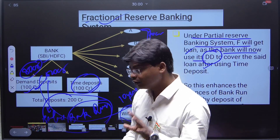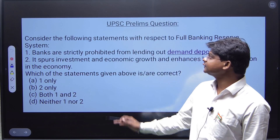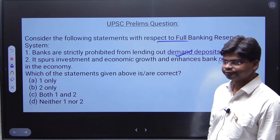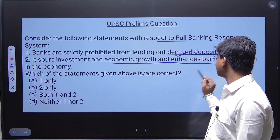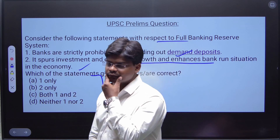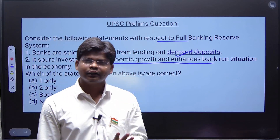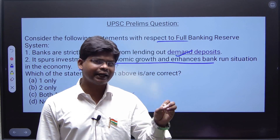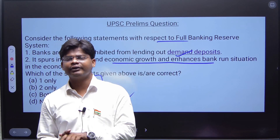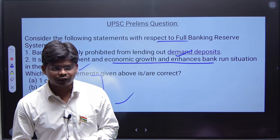I have made one UPSC prelims-style question on this concept. Consider the following statements with respect to the full banking reserve system: Statement 1 says banks are strictly prohibited from lending out demand deposits; Statement 2 says it spurs investment and economic growth; Statement 3 says it enhances the bank run situation in an economy. Which of the statements is or are correct? You can comment below and I will get back to you with the answer. The key things to remember are demand deposit, time deposit, which banking system allows loans, and which system is beneficial for the Indian economy. See you next time!